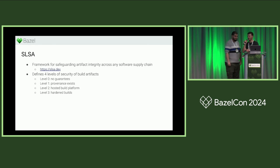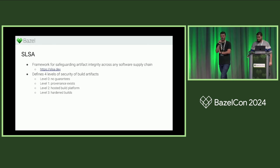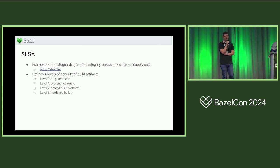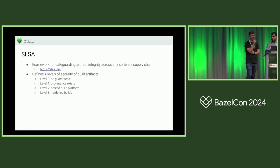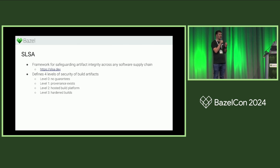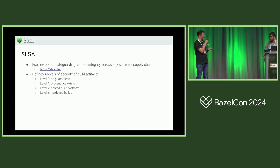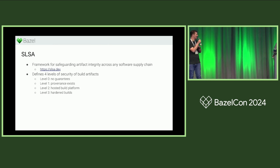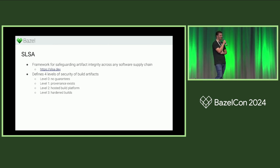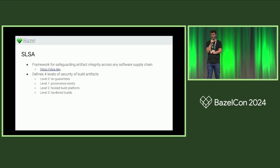We've talked a lot about licenses, which is definitely a very important part of supply chain security, but it's not the only part. With supply chain security, the thing we care about is that if something goes wrong, we can find out that it went wrong and what went wrong — think of the recent XZ exploit, the compression library exploit, where someone was injecting malicious code into a commonly used library. Having an SBOM would have helped everyone figure out whether they were transitively depending on it and shipping it to production.